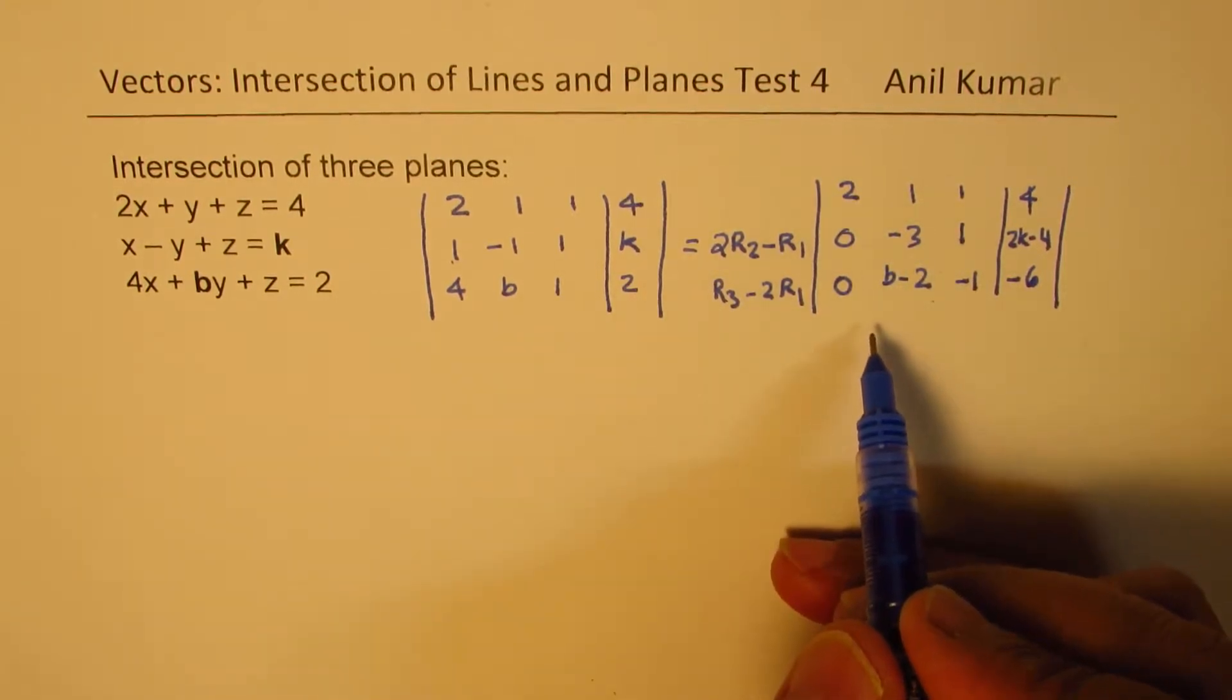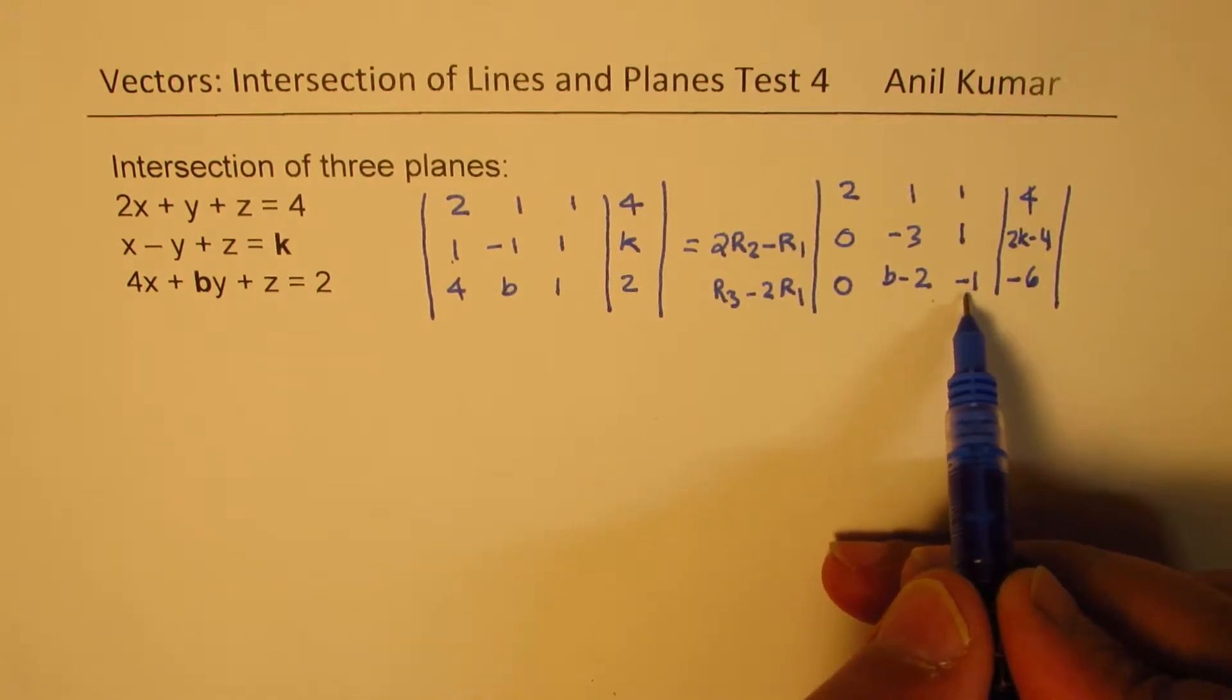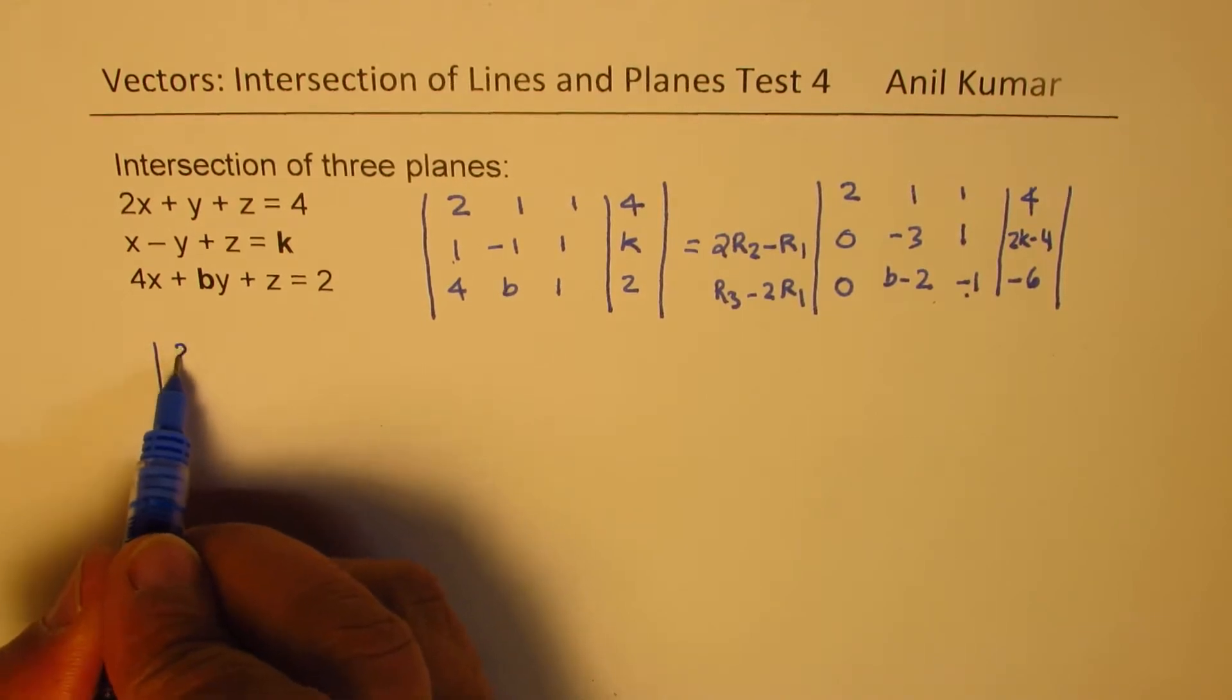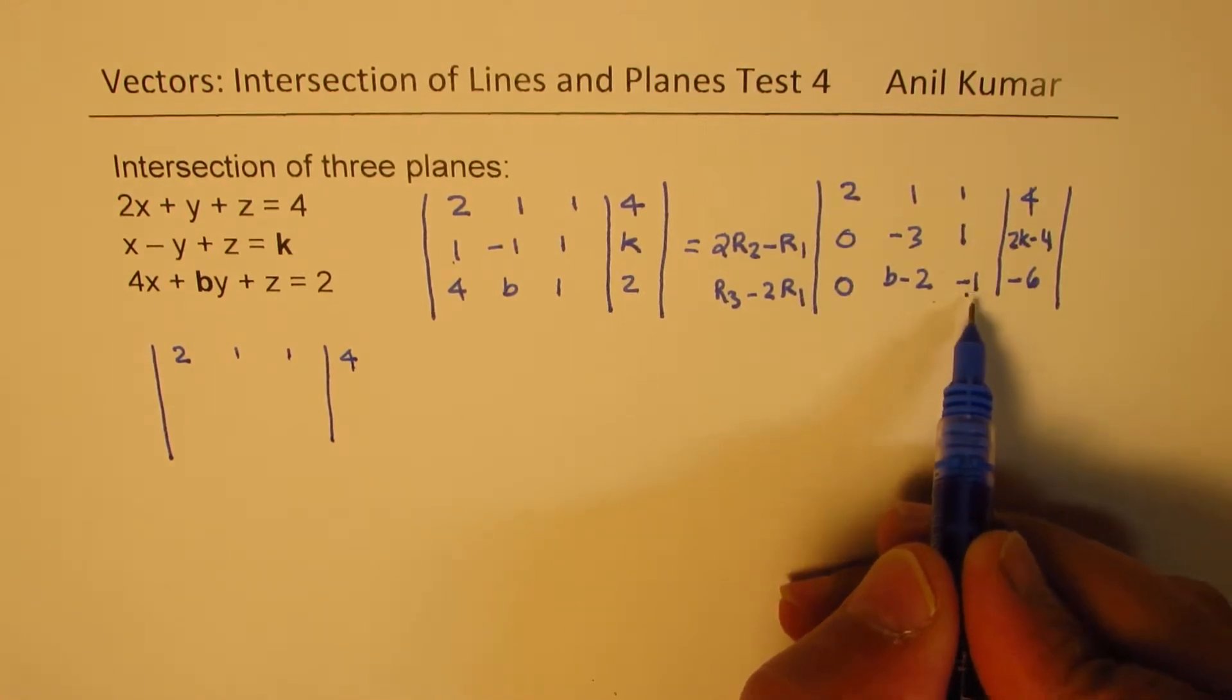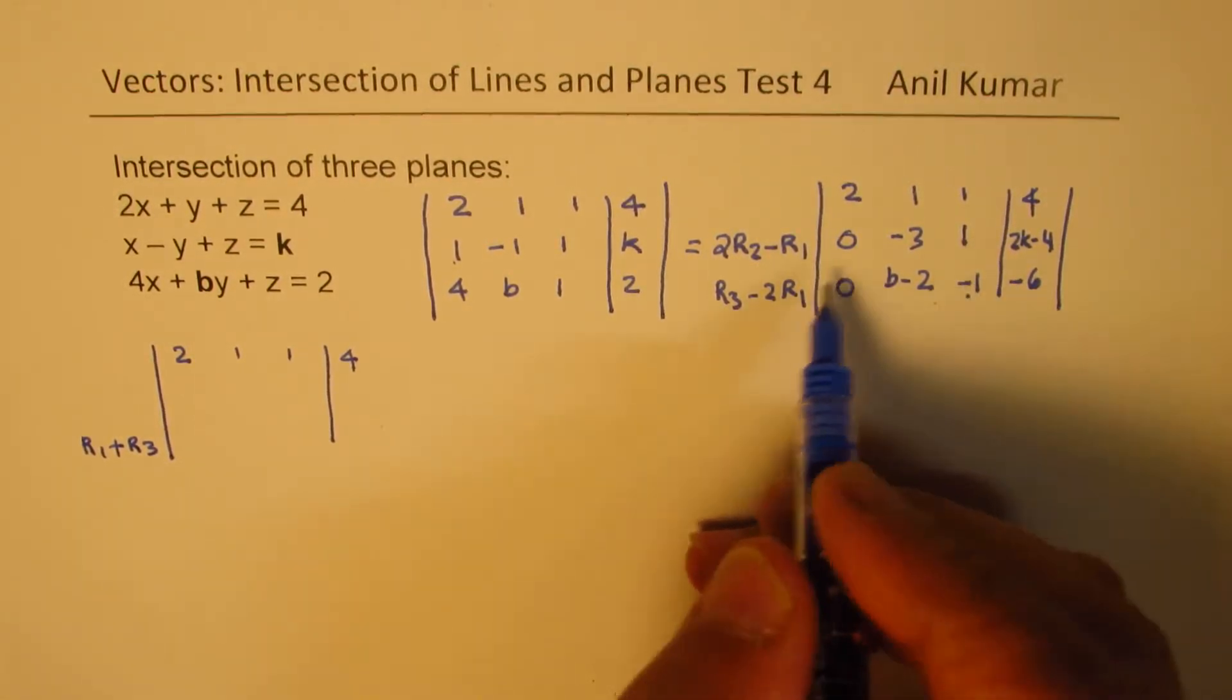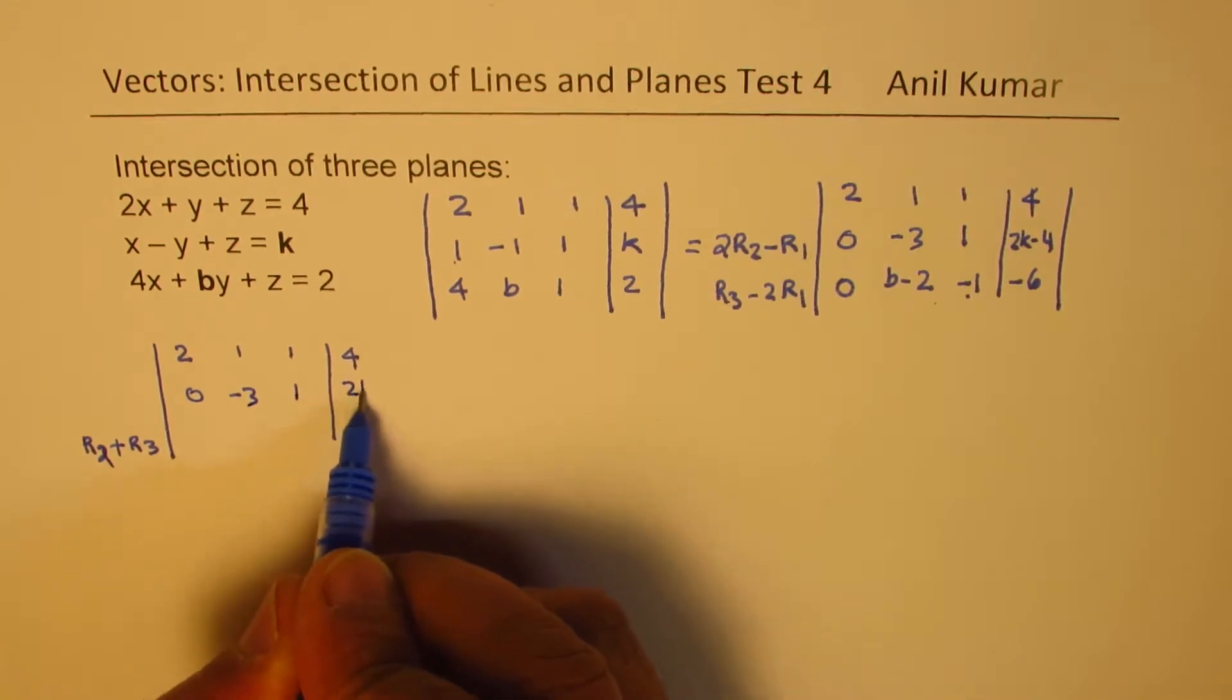Now, the idea is to make b minus 2 as 0. So what we can do here is, we can make this as 0. So at least we'll get 2 zeros, and then we can equate that to 0. So we'll now write our system as 2, 1, 1, 4. We want to make this one as 0. So if I make this as 0, what happens? I can add r1 to r3. Sorry, r2, because that is 0 plus 0.